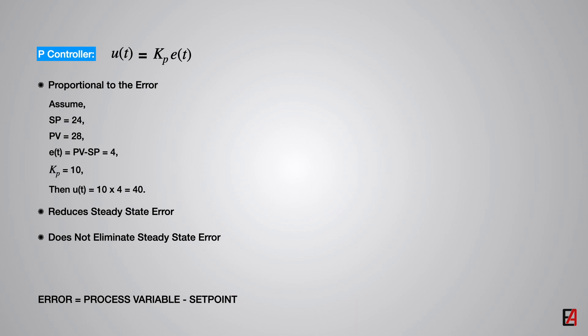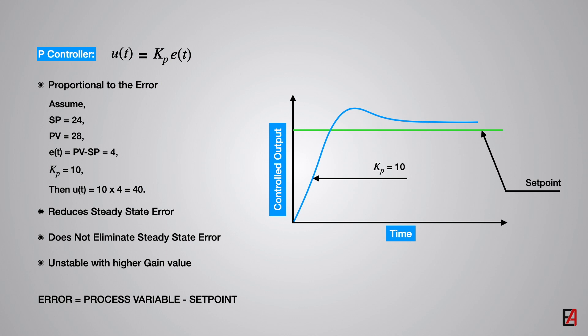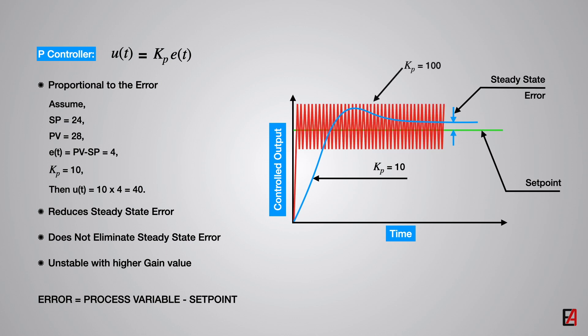If you are wondering what is the steady state error, the steady state error is the difference between the desired controller response and the actual controller response. If the proportional gain is increased to a larger value in order to reduce the steady state error, the control output will start to oscillate and further increasing the proportional gain will make the system unstable.